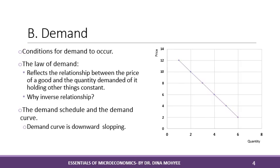Let's now turn to the analysis of the demand and supply model, beginning with the demand side. What do we mean by demand for a good, or more precisely, what are the conditions for demand to occur? In order to say that there is demand for a certain good, such as a car, there must be three conditions: the person should have a desire for the product, he should have the financial ability to afford it, and finally, he should have a plan to buy it.